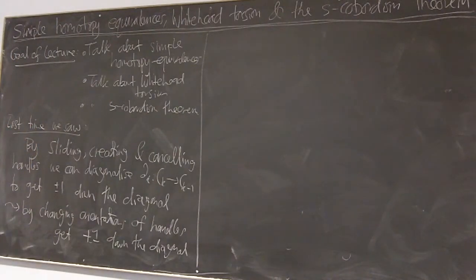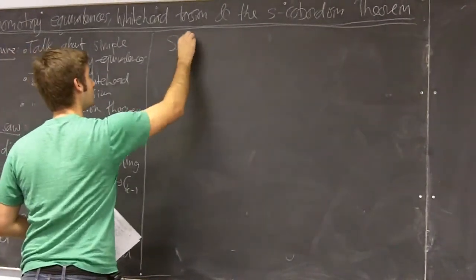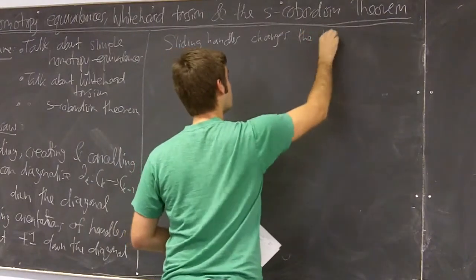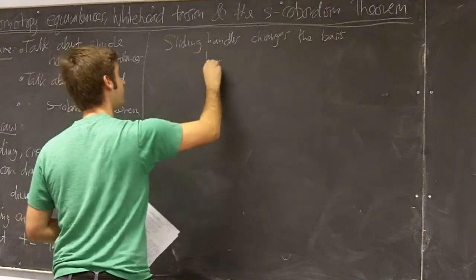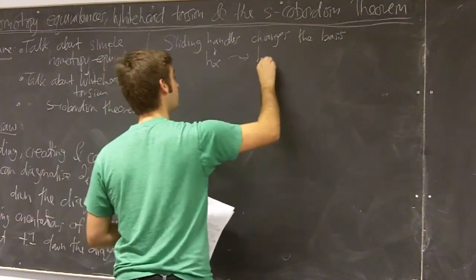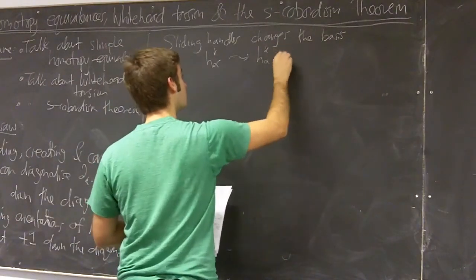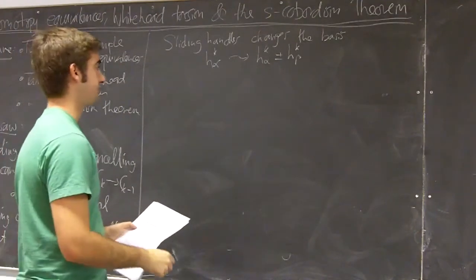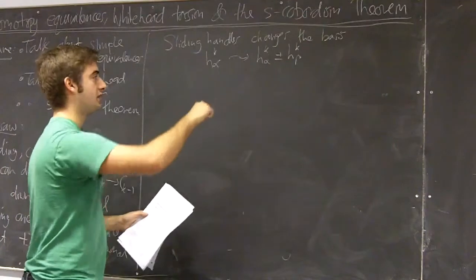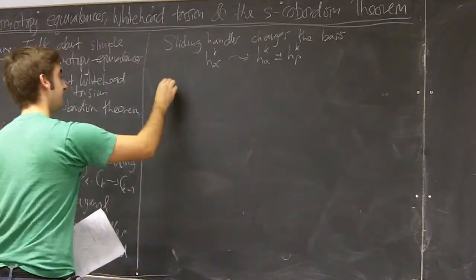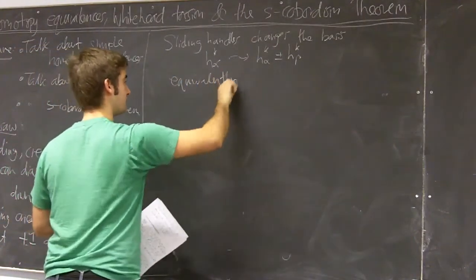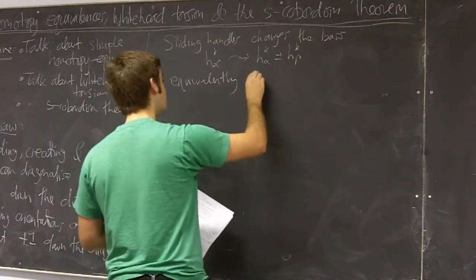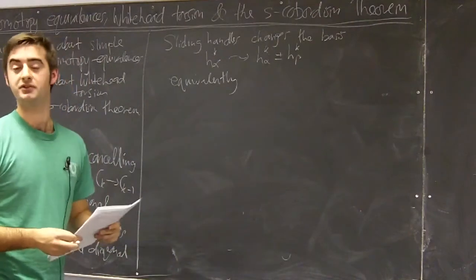That's what happens in general when we don't have a trivial fundamental group. We saw that when we slide a handle, we change the basis — say from h_{α,k} to h_{α,k} plus or minus h_{β,k}. We slide beta over alpha. Equivalently, this has the effect of multiplying δ_k by an elementary matrix, which corresponds to doing an elementary row or column operation on δ_k.